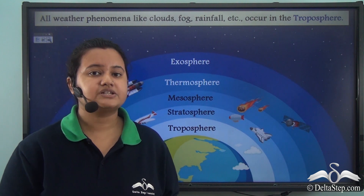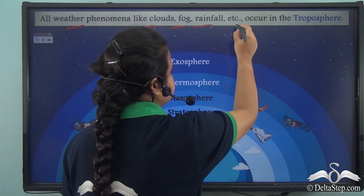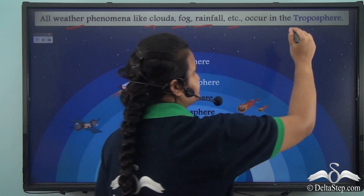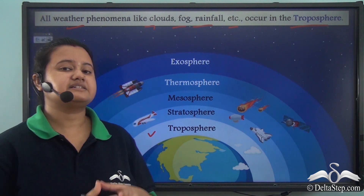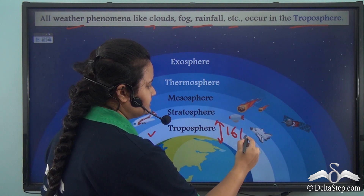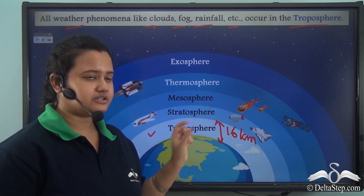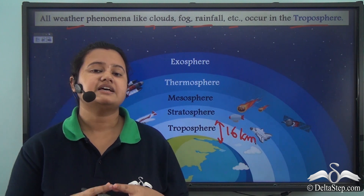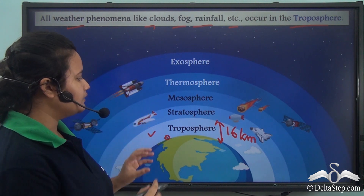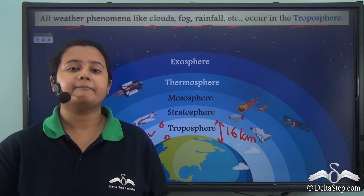We also know that all weather phenomena like cloud formation, fog, and rainfall occur in the lowest layer of the atmosphere, that is the troposphere. The troposphere extends at an average altitude of 16 km above the earth's surface. Cloud formation takes place within this zone. Some clouds lie very close to the earth's surface while some clouds are found at substantial heights. Now we will classify clouds based on their height.